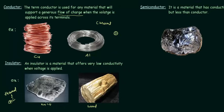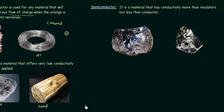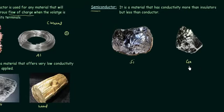Semiconductor is the most important topic in this course. It is a material that has conductivity more than insulators but less than conductors — that's why we call it semiconductor. The flow of current in a semiconductor is not as much as in a conductor and not as low as in an insulator. The two most important semiconductor materials are silicon, represented by Si, and germanium, represented by Ge.